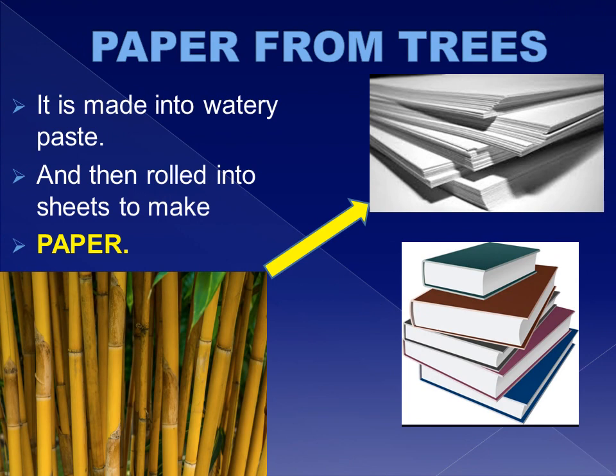The wood from bamboo and pine trees is usually very soft. It can be made into a watery paste and then rolled into sheets to make paper.